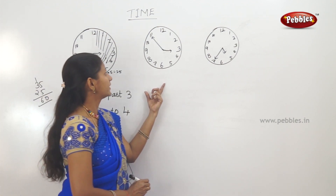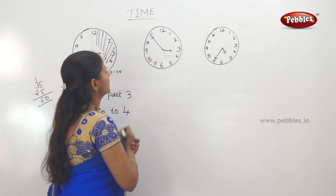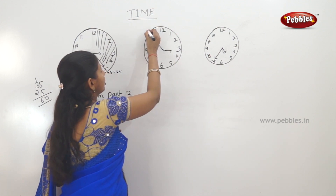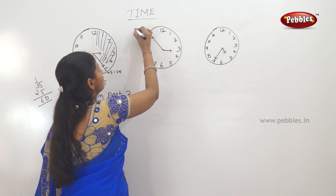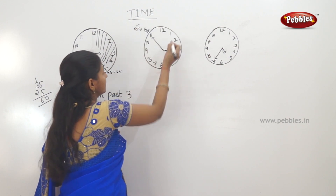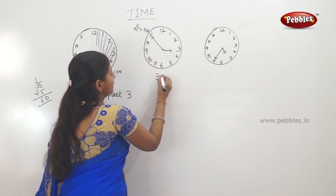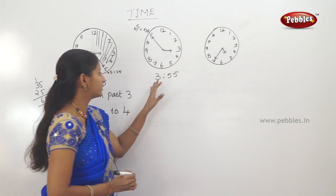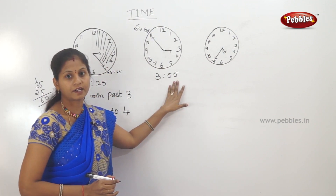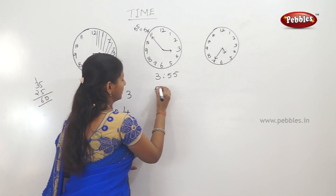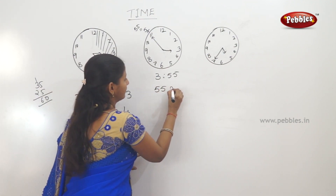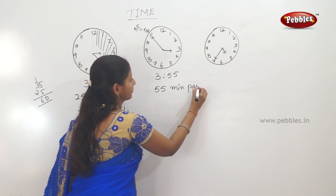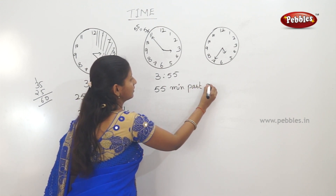Next. Short hand is 3, long hand is 11. 11 times 5 is 55 — that means 55 minutes. 3 hours, 55 minutes. That means 55 minutes past 3.